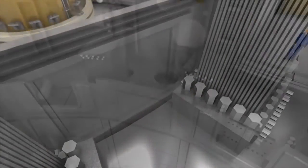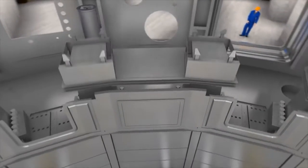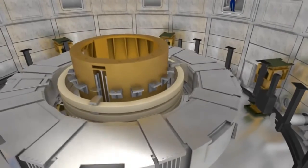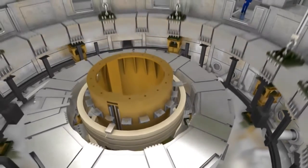Thermal shields that will protect the steel support structure are then attached. And finally, poloidal field coil number 6 is lowered into the pit, followed by PF coil number 5.